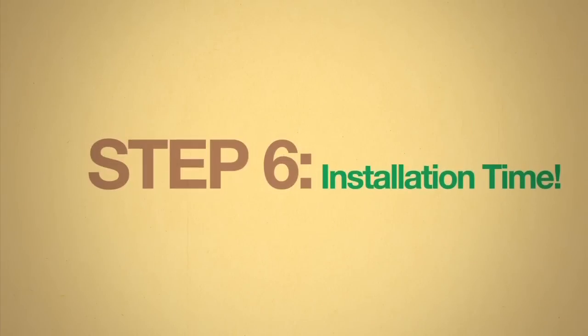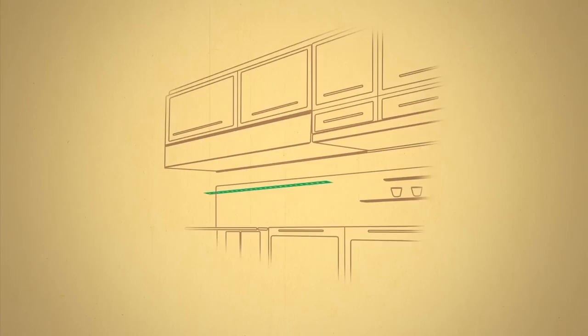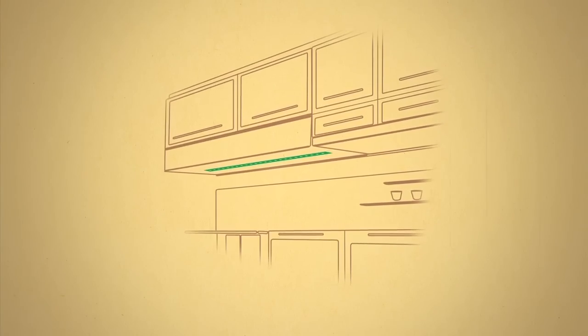Step 6. Installing LED strip light is as easy as peel and stick. Peel off the protective paper and stick the strip into place. Easy, right?